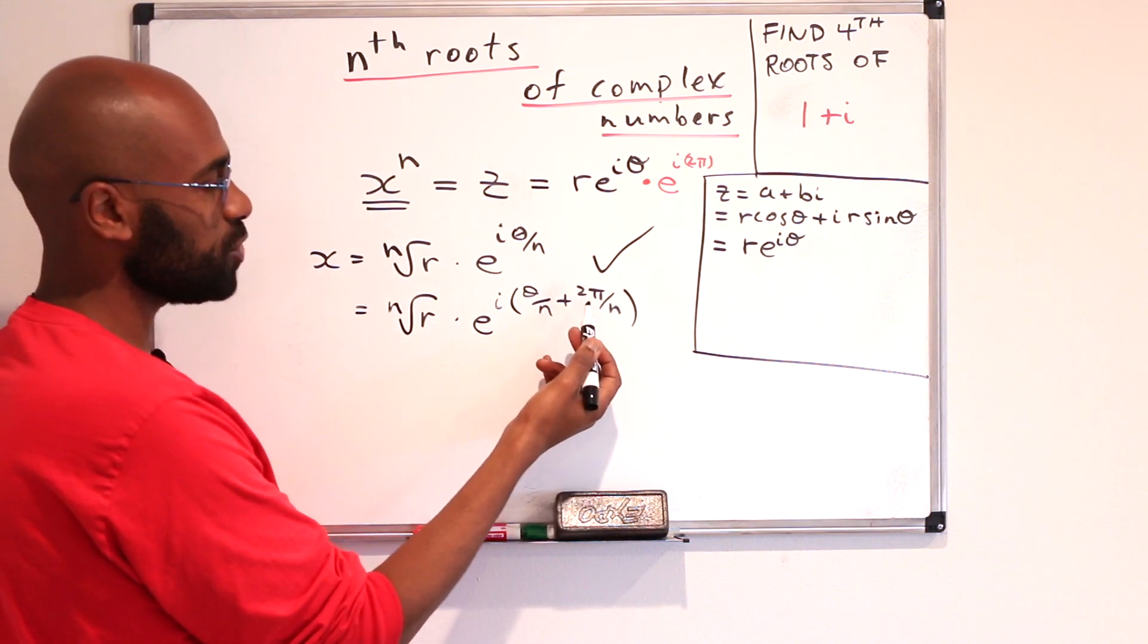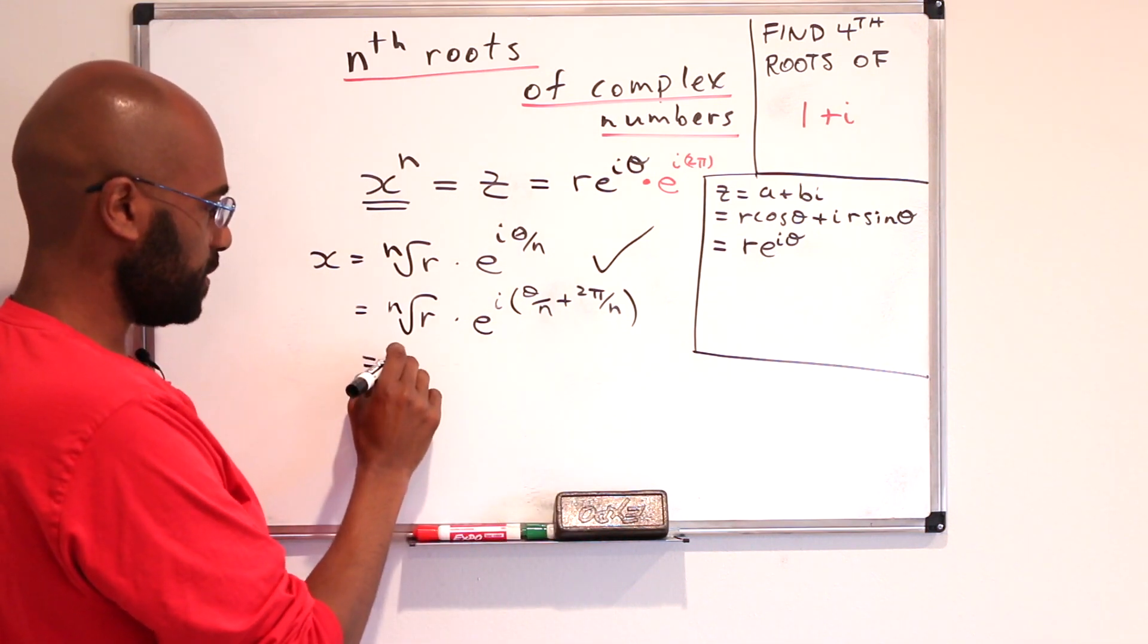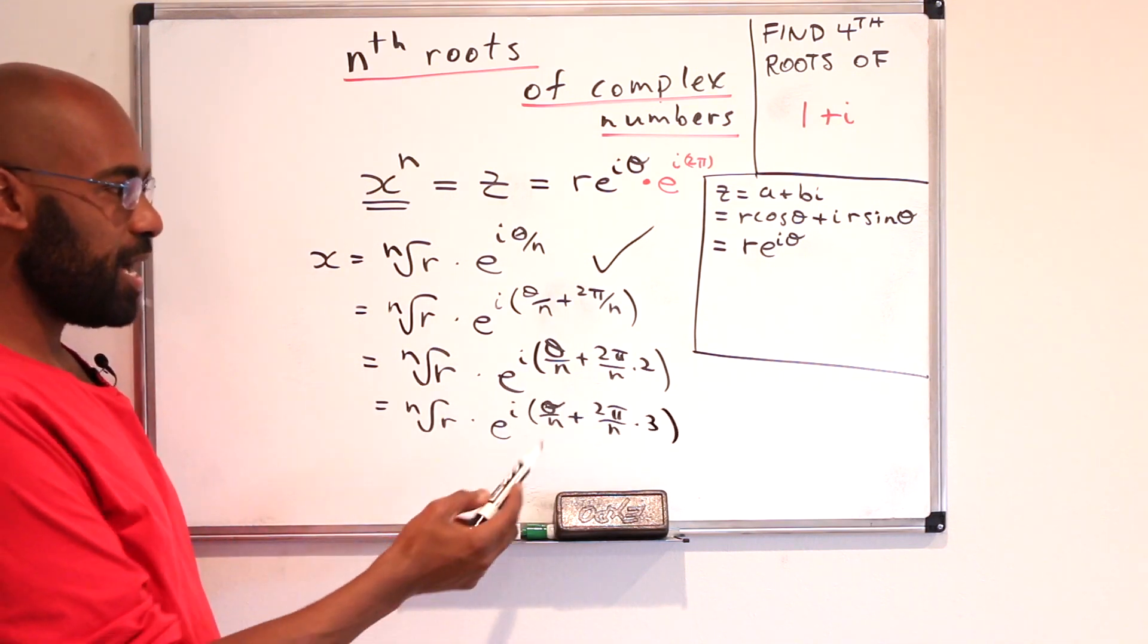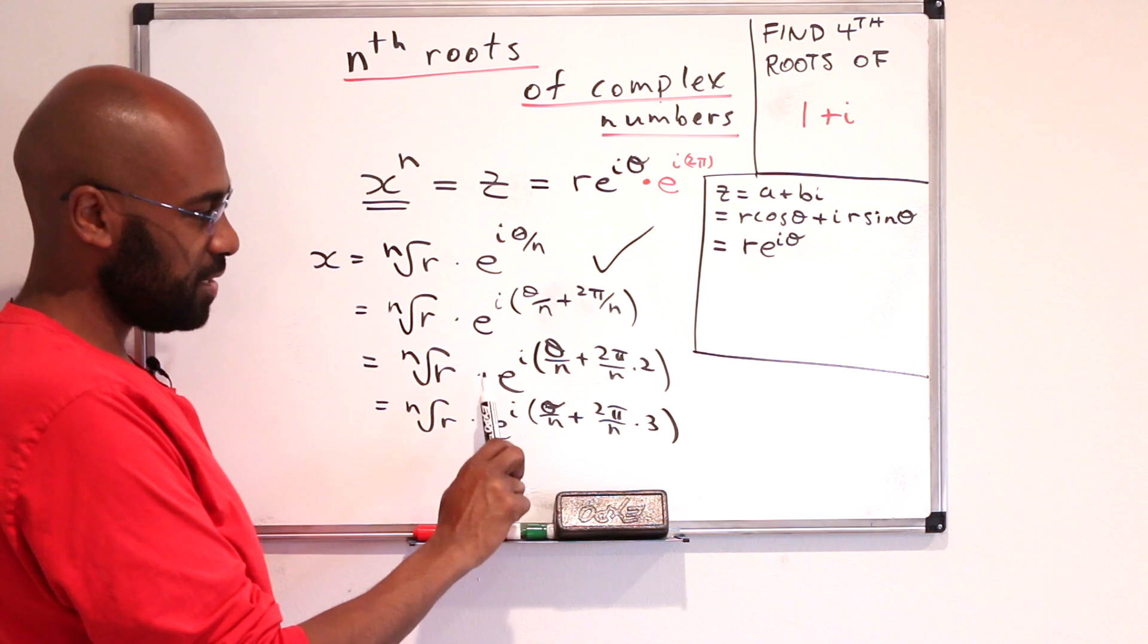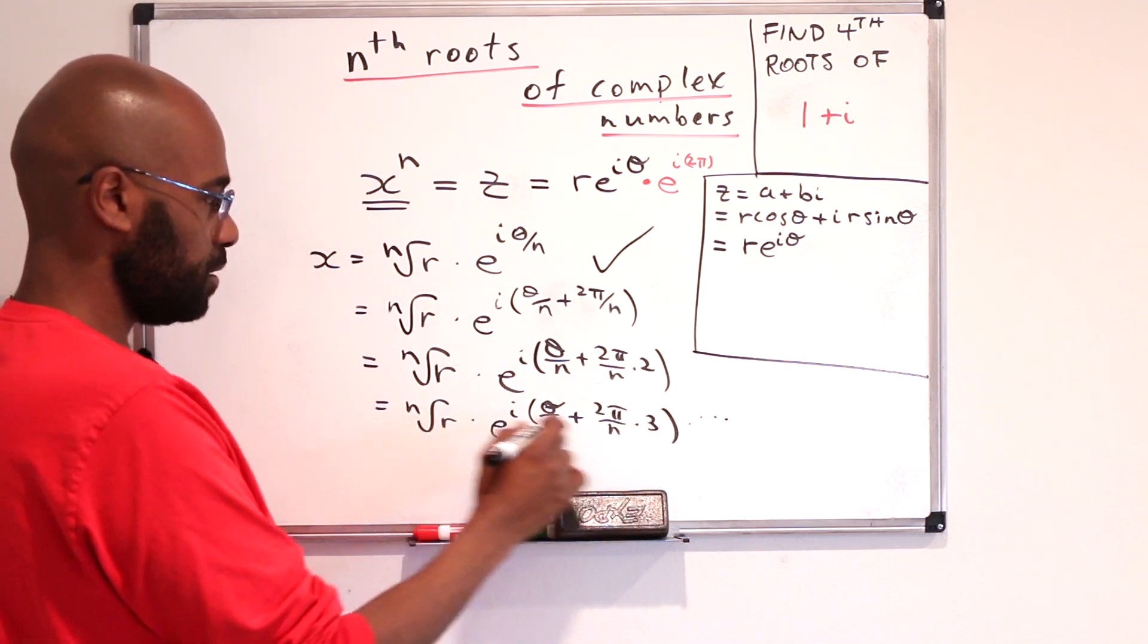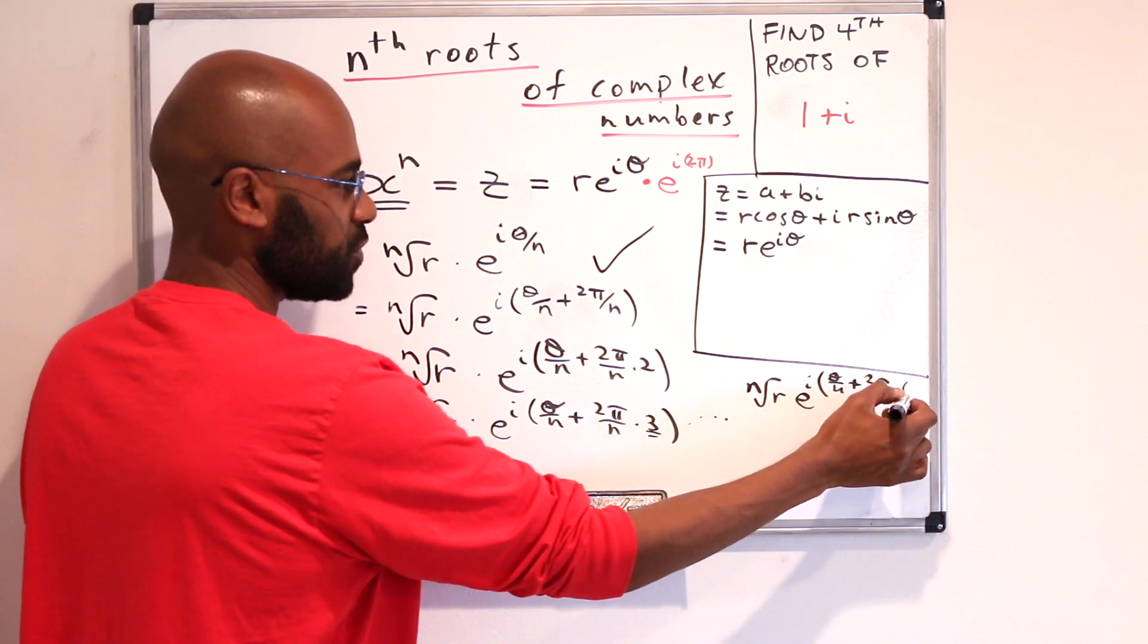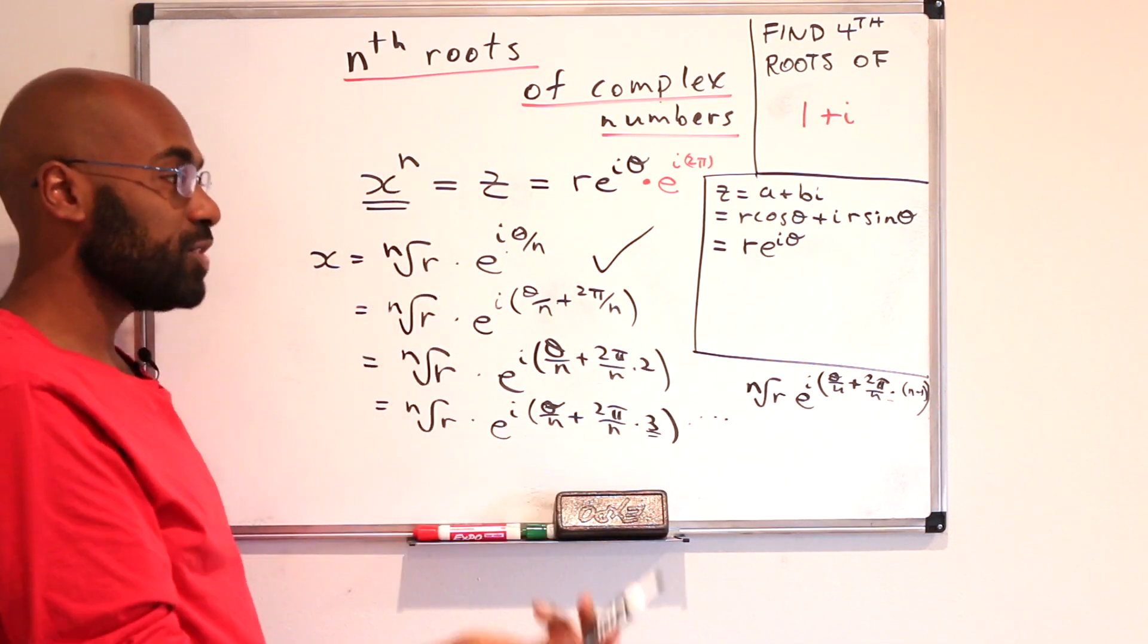But we can do this with other multiples of 2 pi as well. If we replace this with 4 pi, we'd also get that e to the i times 4 pi is 1. So, we can set x to be the nth root of r times e to the i times theta over n plus 2 pi over n times 2. And we get another root. And we can do this again by multiplying the 2 pi over n by 3, and we can keep doing this until we get the last one being e to the i theta over n plus 2 pi over n times n minus 1. We notice then that we have 1, 2, 3, 4 n total roots. And since this thing has at most n roots, these are all the roots.